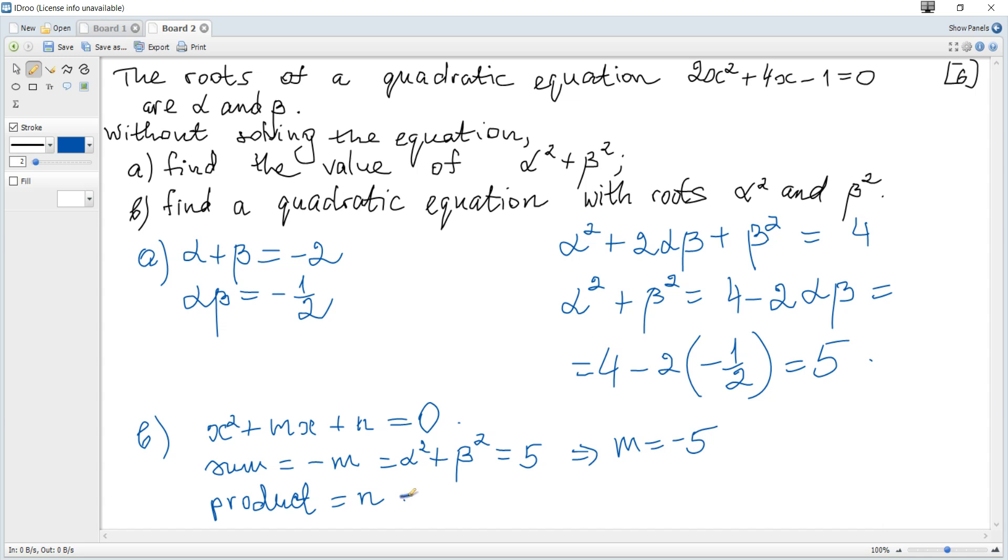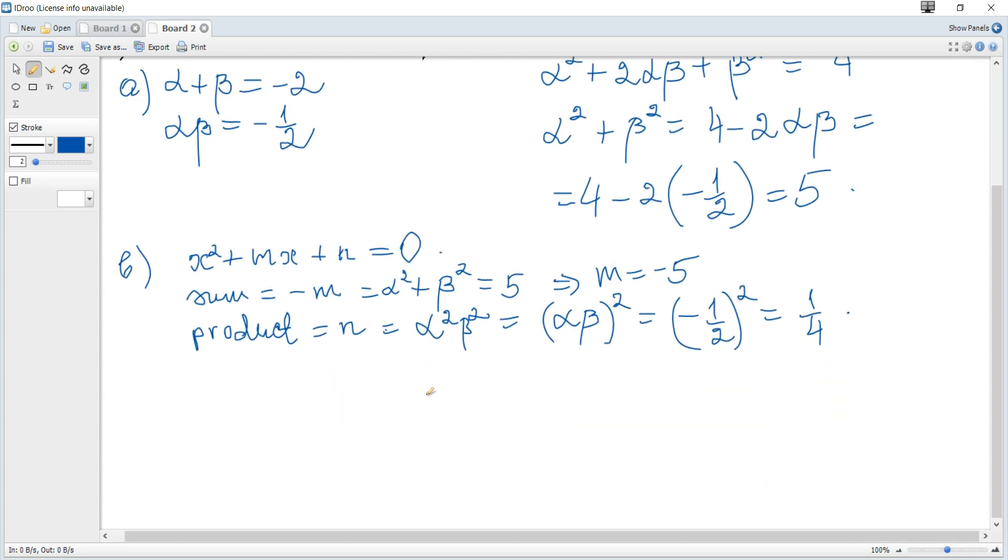The product is α² multiplied by β², which is (αβ)². Since αβ = -1/2, this equals (-1/2)² = 1/4. Hence, the required equation is x² - 5x + 1/4 = 0.